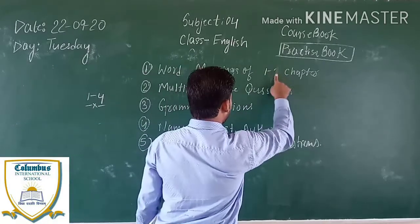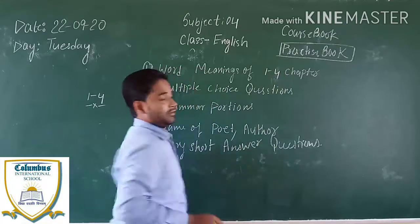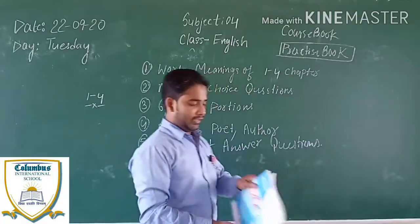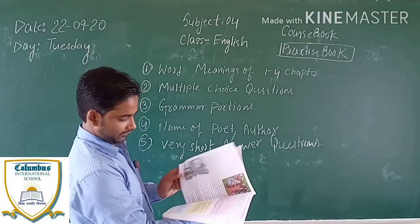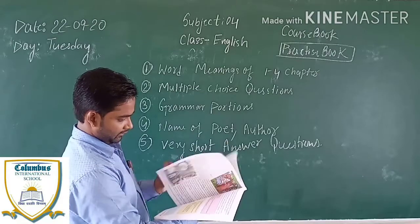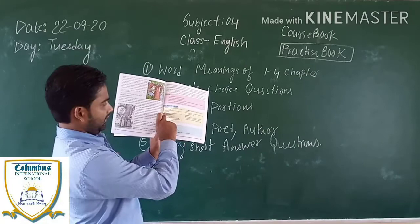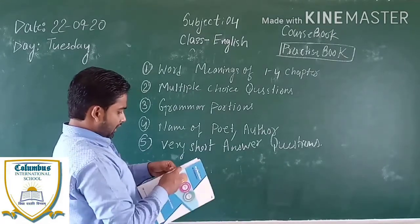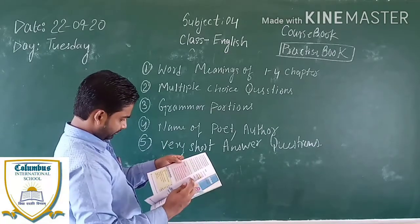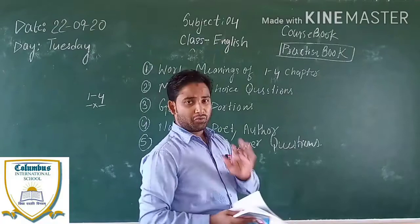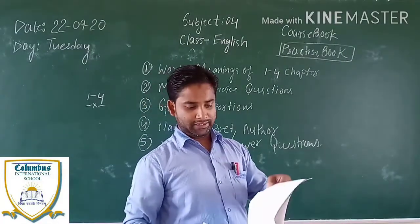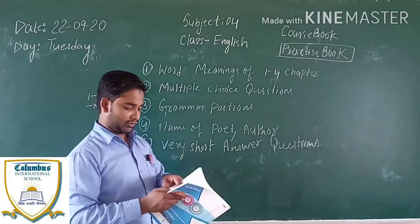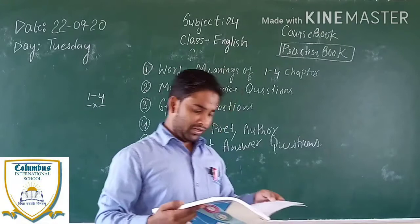The first thing is the word meaning from chapters 1 to 4. In each story, there will be word meanings highlighted with a yellow background — you have to study those. After that, you have to study the multiple choice questions, true and false, fill in the blanks — whatever you see in your exercises. And then you have to study the grammar topics I have taught from the textbook as well.